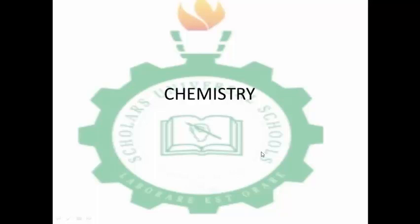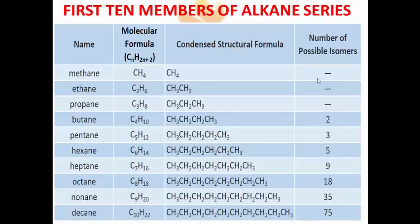We will be talking about the alkanes, the homologous series of alkanes. These are the first 10 members of the alkanes series. As we said in the last class, a homologous series is the family of alkane compounds which share a sub-structural pattern and they differ from successive members by a CH2 group. This is a homologous series of hydrocarbons called the alkanes series.